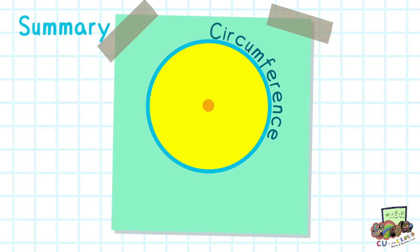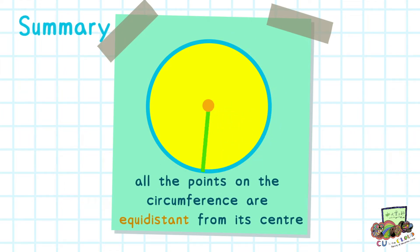Circumference is a curved line that encloses the circle shape. A circle has all the points on its circumference equal distance from its center.